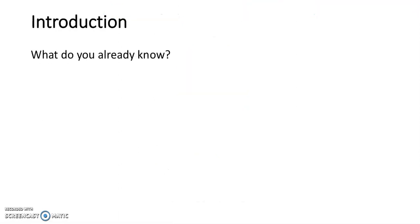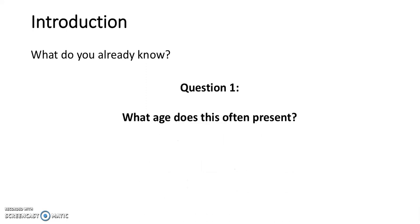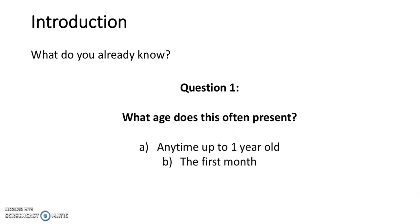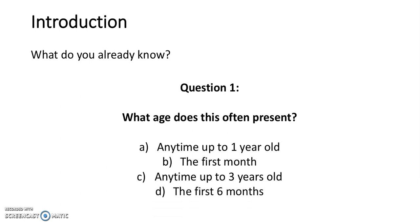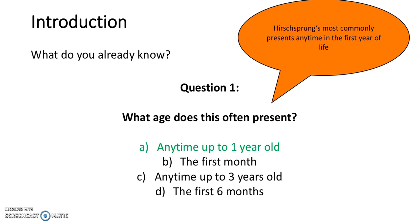So let's begin with some multiple choice questions to see what our knowledge base is. Question 1: What age does this often present? Is it A. Any time up to one year? B. The first month? C. Any time up to three years? Or D. The first six months? Think about any children in the past you may have seen with this condition and when did it first become apparent? The answer is A — any time up to one year. Hirschsprung's most commonly presents around that time.